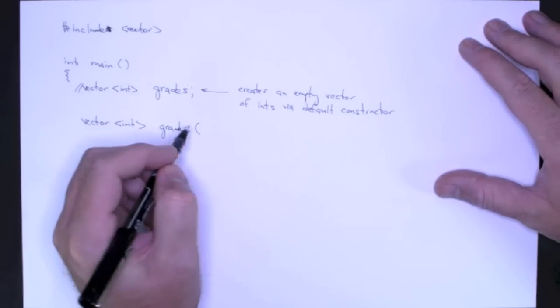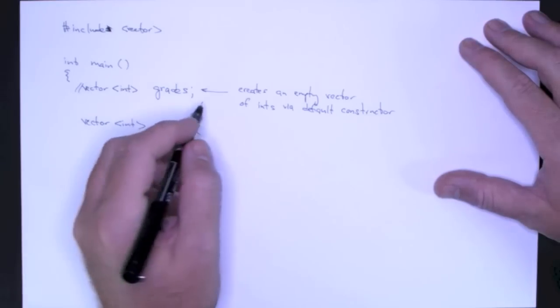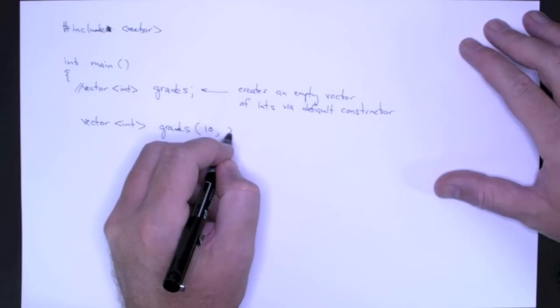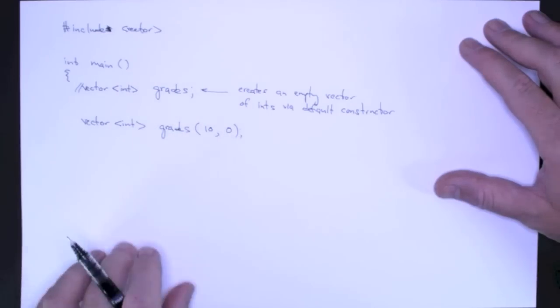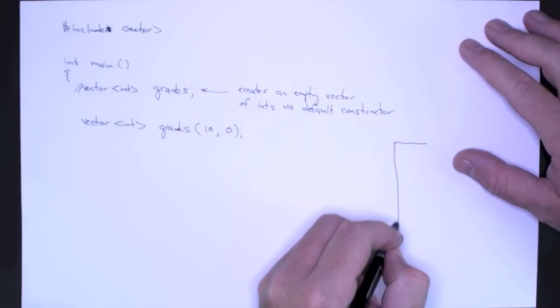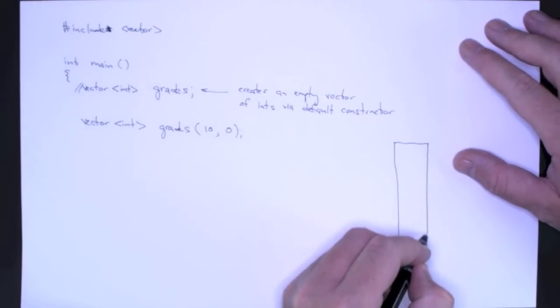But I can also specify that I want to store 10 grades, and I want to give them an initial value of zero. So this is a call to the explicit constructor, and what this does is this creates a vector of size 10